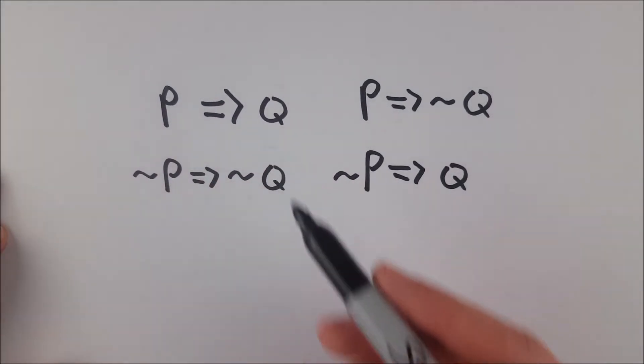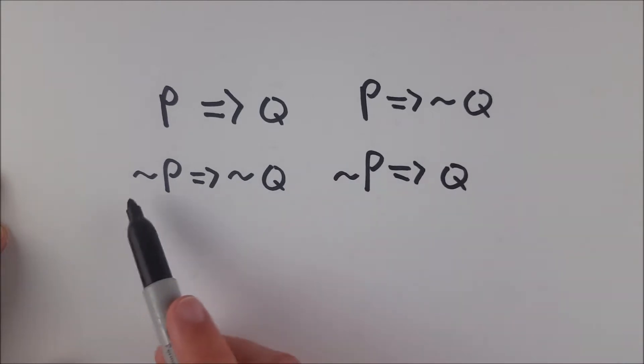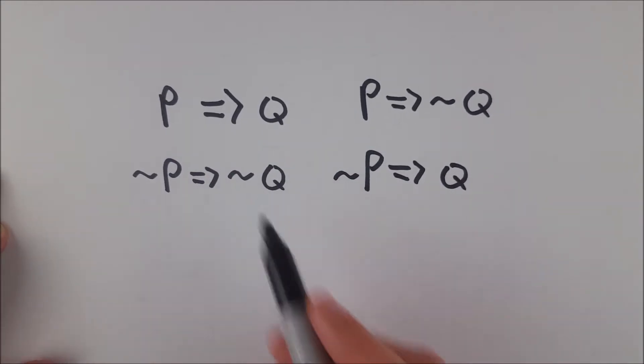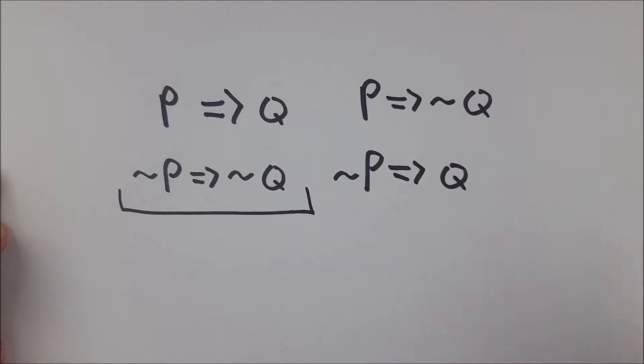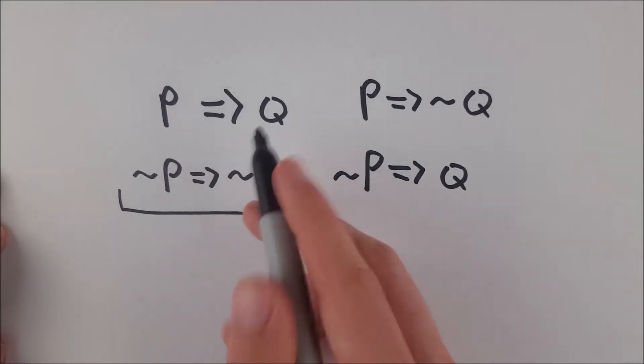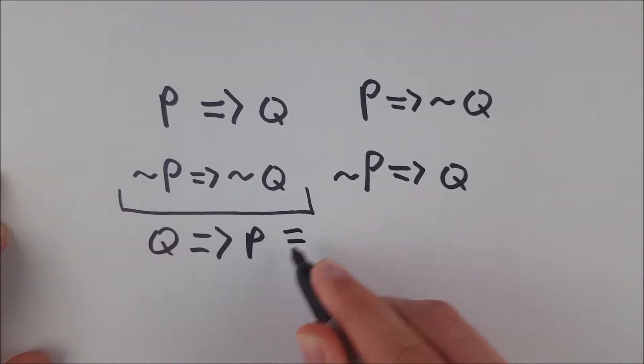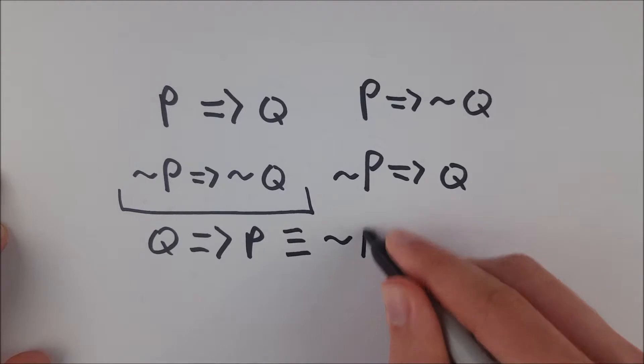Now from P implies Q, we cannot assume that not P implies not Q is true. So this does not follow from that. However, the inverse of a statement like this one here is logically equivalent to the converse of the statement. Q implies P. So Q implies P is logically equivalent to not P implies not Q.